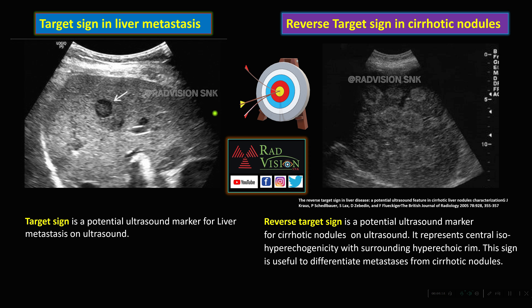Next: in the liver on ultrasound, there is an echogenic lesion surrounded by a hypoechoic rim, which is classically a metastasis. The target sign is a potential ultrasound marker for liver metastasis. The reverse target sign is seen in cirrhotic nodules, where there will be a peripheral hypoechoic rim surrounding a central area. Remember: target sign is seen in liver metastasis, whereas reverse target sign is seen in cirrhotic nodules.